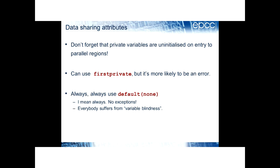One of the most common sources of bugs in OpenMP programs is getting data sharing attributes wrong — getting shared, private, firstprivate, and reductions correct is important. One thing very easy to overlook is that private variables are uninitialized on entry to parallel regions. If you want them initialized you can use firstprivate, but acceptable use cases for firstprivate are fairly few and far between — it's more likely to be an error.